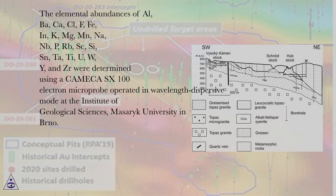The elemental abundances of Li, Ba, Ca, Cl, F, Fe, In, K, Mg, Mn, Na, Nb, P, Rb, Sc, Si, Sn, Ta, Ti, U, W, Y, and Zr were determined using a CAMECA SX-100 electron microprobe operated in wavelength dispersive mode at the Institute of Geological Sciences, Masaryk University in Brno.